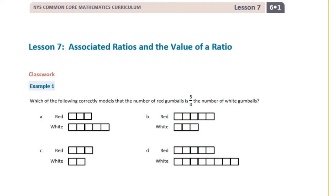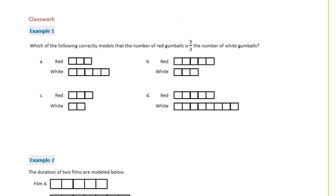Sixth grade module 1, lesson 7 classwork, example 1: which of the following correctly models that the number of red gumballs is five-thirds the number of white gumballs? Here we start seeing ratios represented as fractions. Five-thirds is the same as five to three, so we're looking for five red gumballs for every three white gumballs. The answer is B.